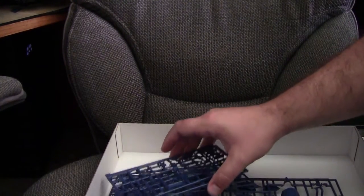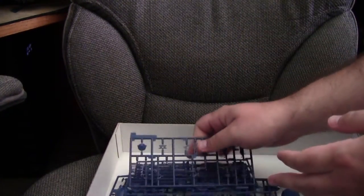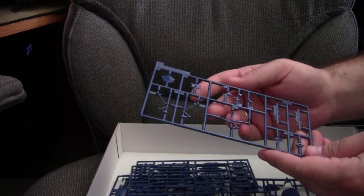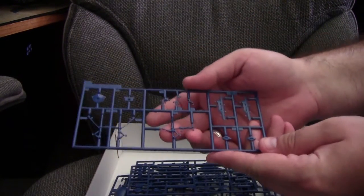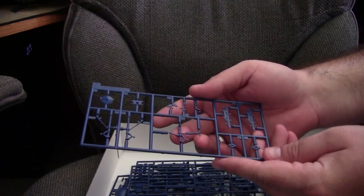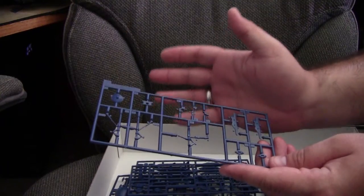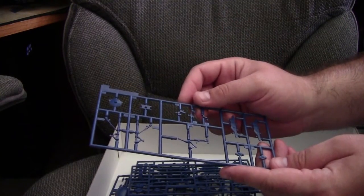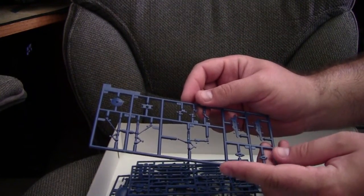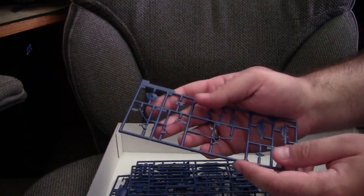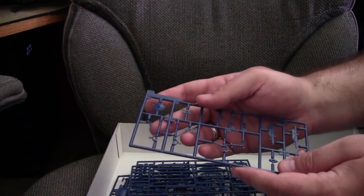Continuing on, we have the sprue with the landing gear, specifically the nose gear, which is very fine and delicate. Be careful when cutting it off the sprue as it looks like it will break easily. Similarly with the main gears.